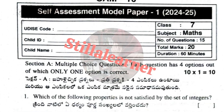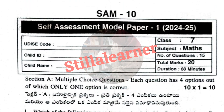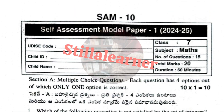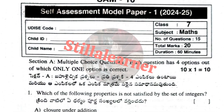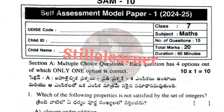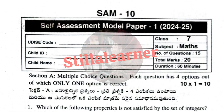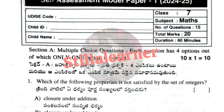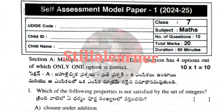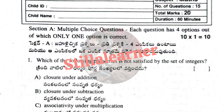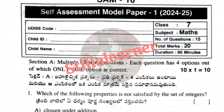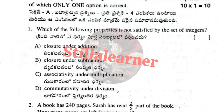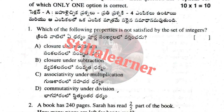Bismillahirrahmanirrahim. Hey guys, welcome back to my channel That is Still a Learner. This video is all about the question paper plus answer key of 7th class mathematics — the 7th class self-assessment model paper 1 maths, full question paper with answer key. First we will see the entire question paper, and at the end we are going to have the answer key of this question paper.